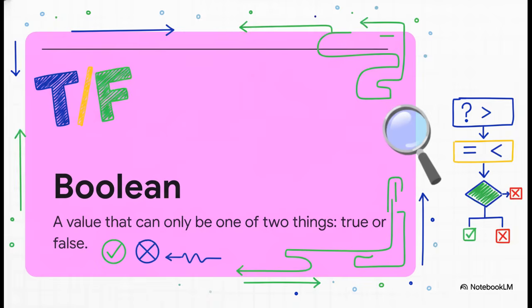Honestly, the best way to picture it is like a light switch. It's either on or it's off. There is absolutely no dimmer switch, no in-between. And you gotta remember this, this simple idea of true or false is the only language our computer really understands. It is the bedrock for every single decision it's ever going to make.